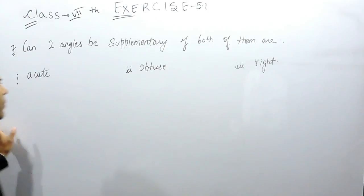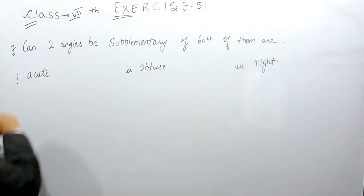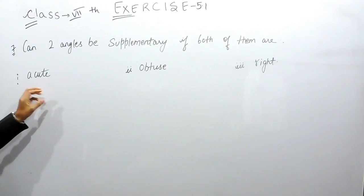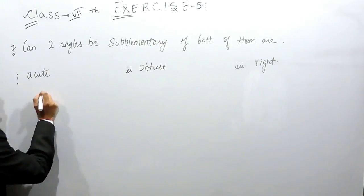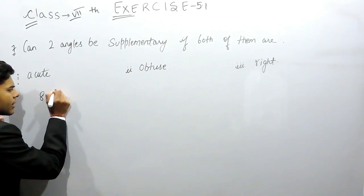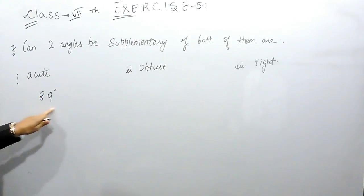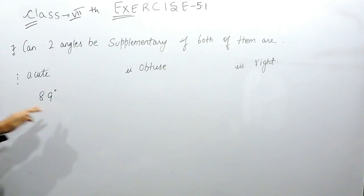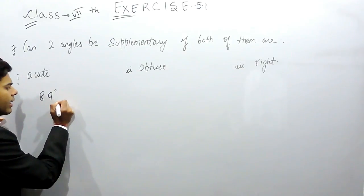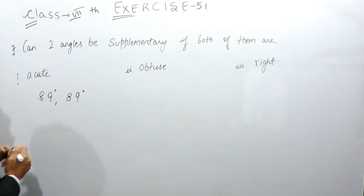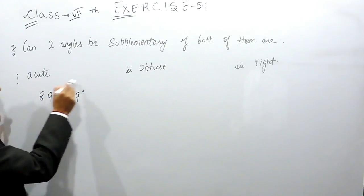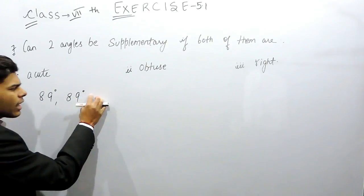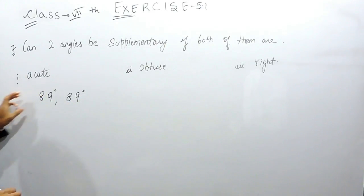Since an acute angle is less than 90 degrees, let's take an example of an angle just less than 90 degrees — 89 degrees. 89 degrees is acute because it is less than 90. We take 89 degrees again as the second angle because it is the highest acute angle we can use. We could also take 89.9, but 89 degrees works as the highest acute angle.